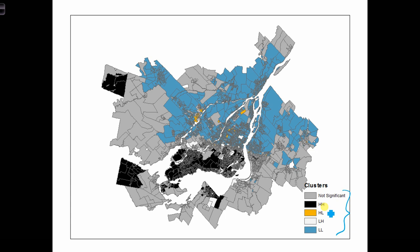We see the black areas are the high with high areas. The black areas are where we have a high number of English speakers surrounded by neighbors that also are high English speakers. All of these black areas are high with high.